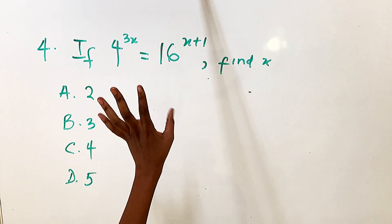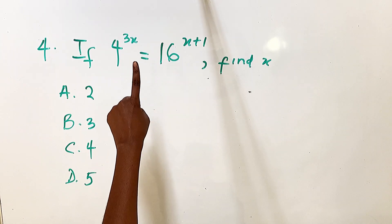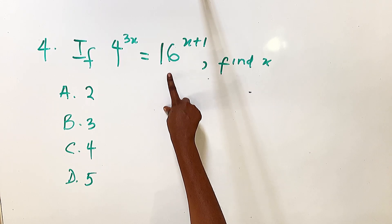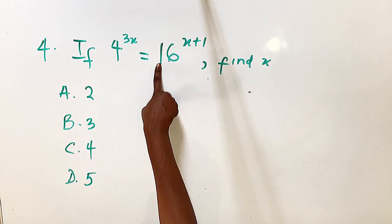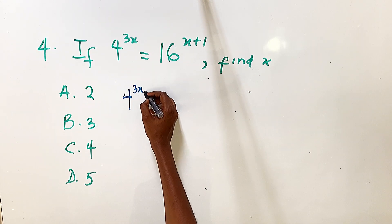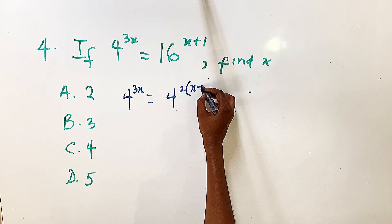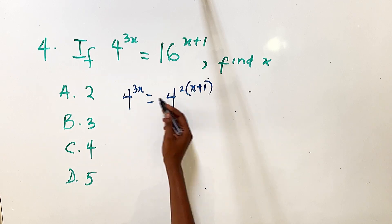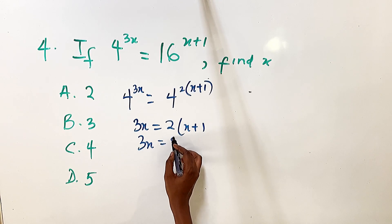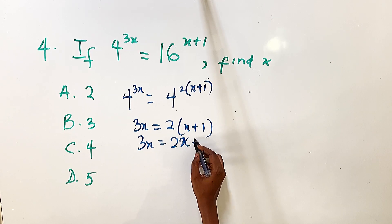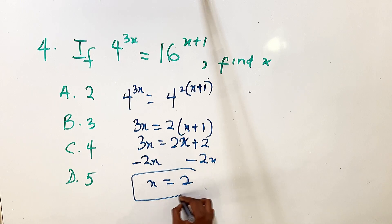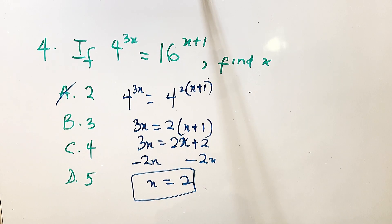The next question has a similar structure. We have 4 raised to power 3x equals 16 raised to power x plus 1. Since 16 is 4 squared, we write 4 raised to power 2 with the bracket x plus 1. Equating powers: 3x equals 2 times open bracket x plus 1, so 3x equals 2x plus 2. Subtracting 2x: x equals 2, which means A is our answer.